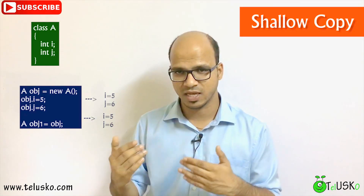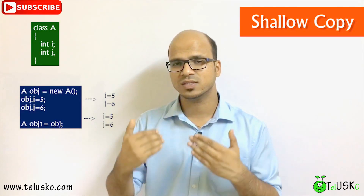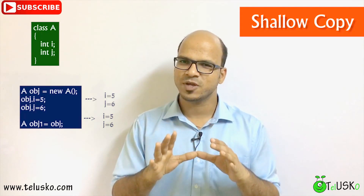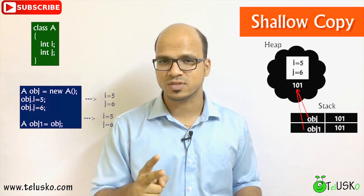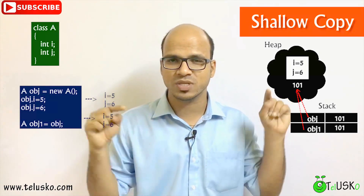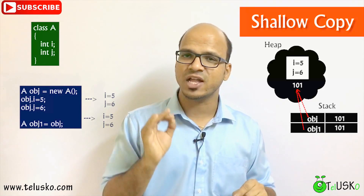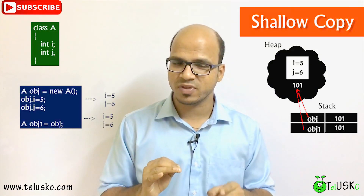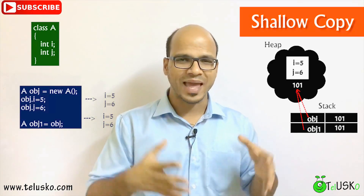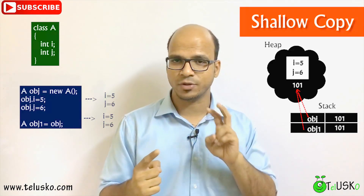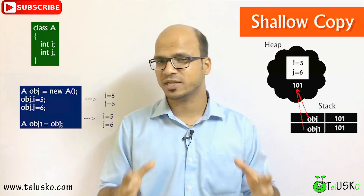So the first line is A obj = new A, and the second line is A obj1 = obj. Now obj1 will have the same value as obj, but you are not actually creating two objects — you have only one object and two references. In heap memory you have only one object; in the stack you have two references both pointing to the same object. If you change the value of obj1 it will reflect in obj as well. That is shallow copy.